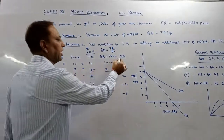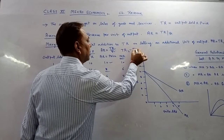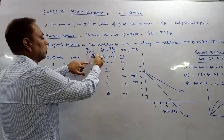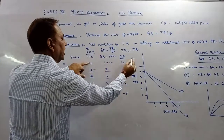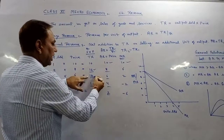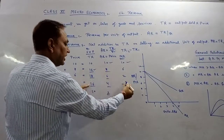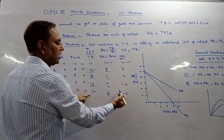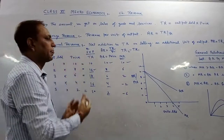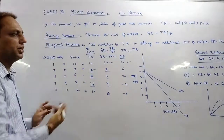Moving ahead to MR. The formula is the same: TR2 minus TR1. Looking at the TR column — there is nothing above the first row, so MR for unit 1 is not applicable. Then 16 minus 10 = 6, 18 minus 16 = 2, 16 minus 18 = minus 2, 10 minus 16 = minus 6. In this way we calculate TR, AR, and MR. Tables of this type also appear for completion.